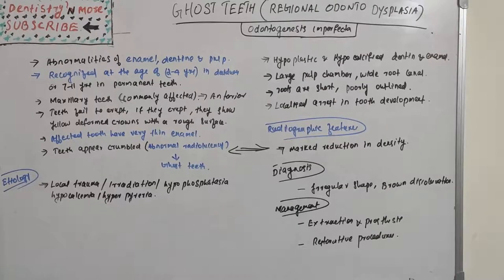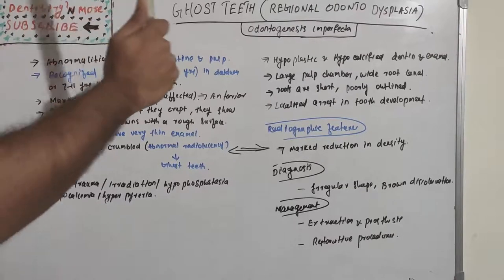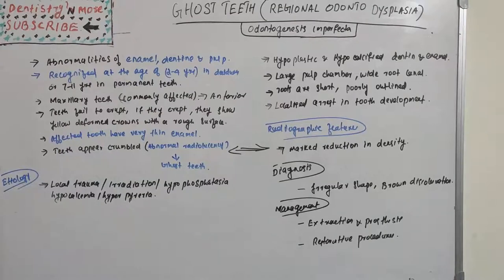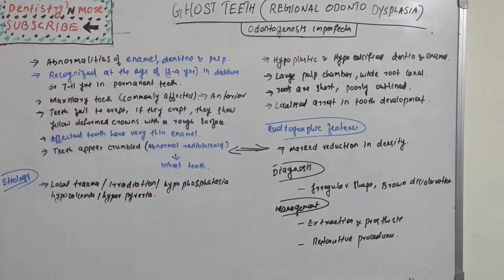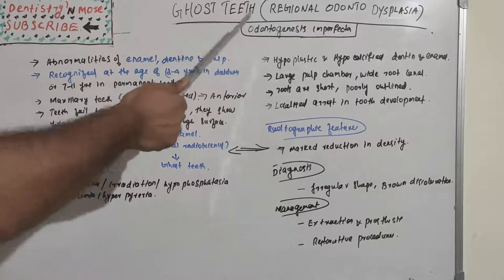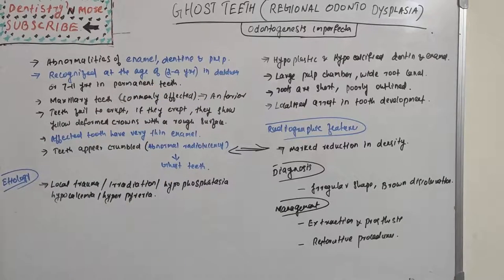To summarize: dentinogenesis imperfecta affects dentine, amelogenesis imperfecta affects enamel, and odontogenesis imperfecta affects both enamel, dentine, and pulp — giving the ghost teeth appearance. That's all about ghost teeth, or regional odontodysplasia, or odontogenesis imperfecta. Thank you, and I'll come up with a new session on dentistry and more.